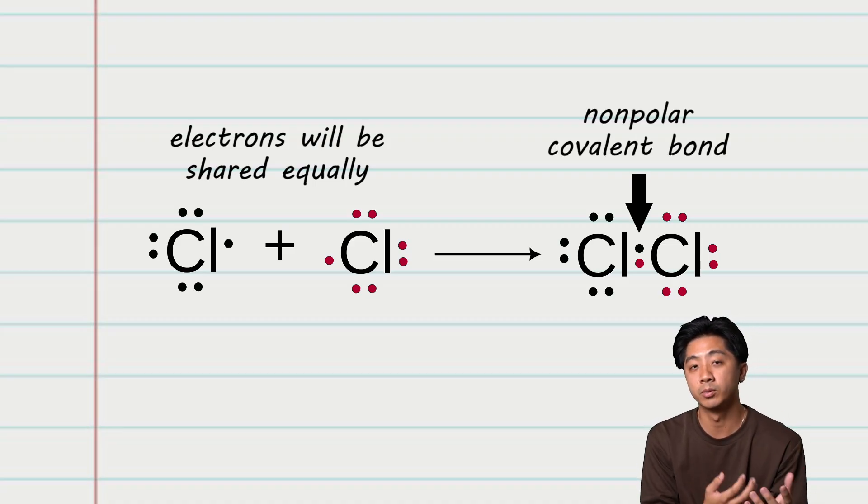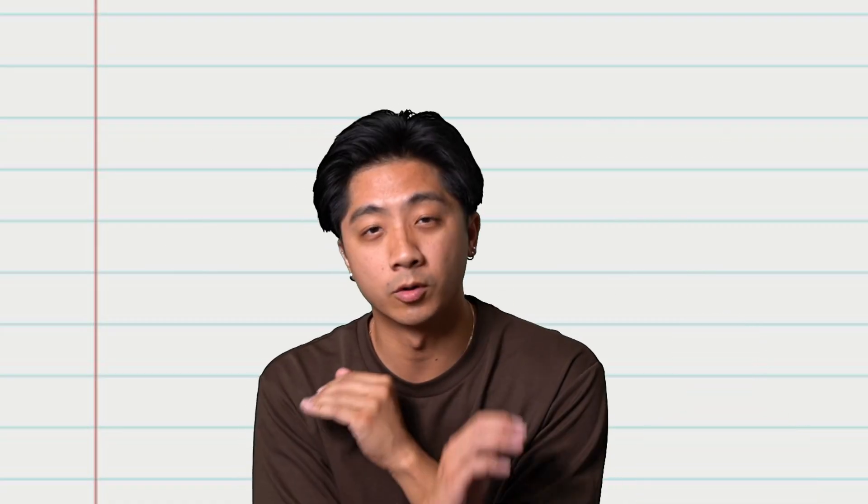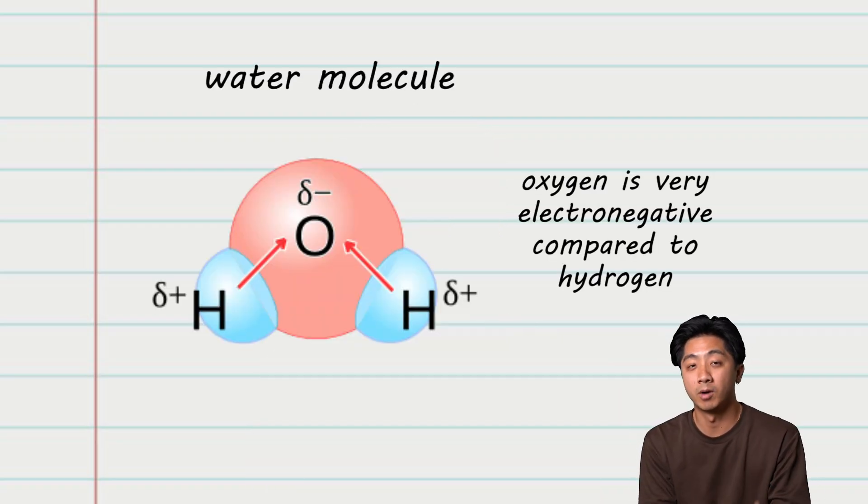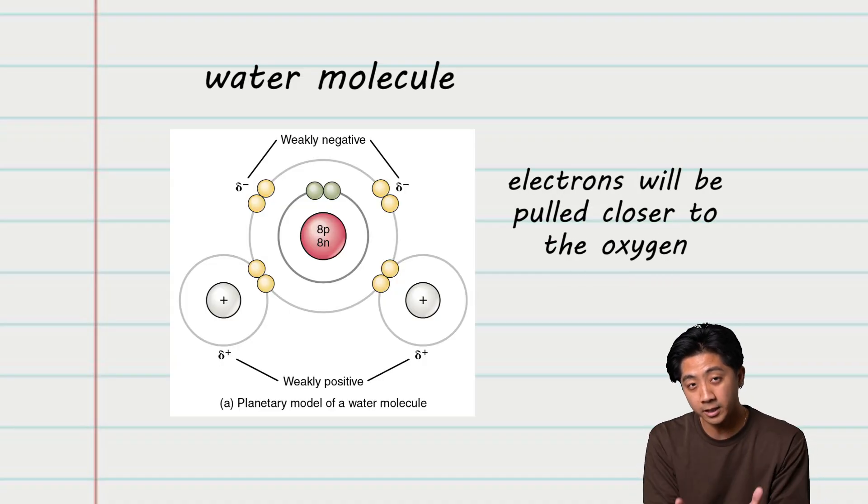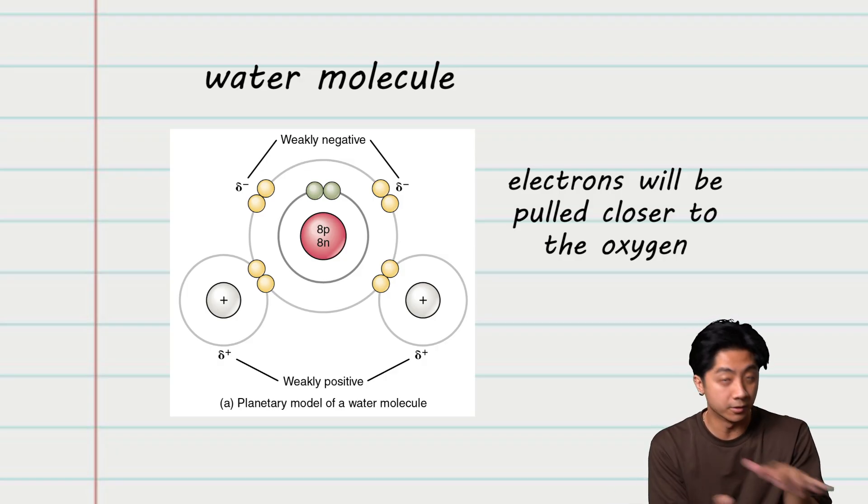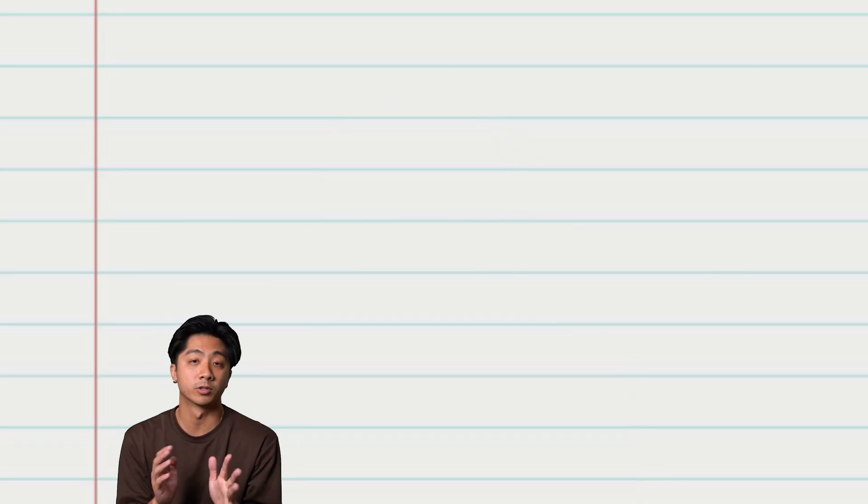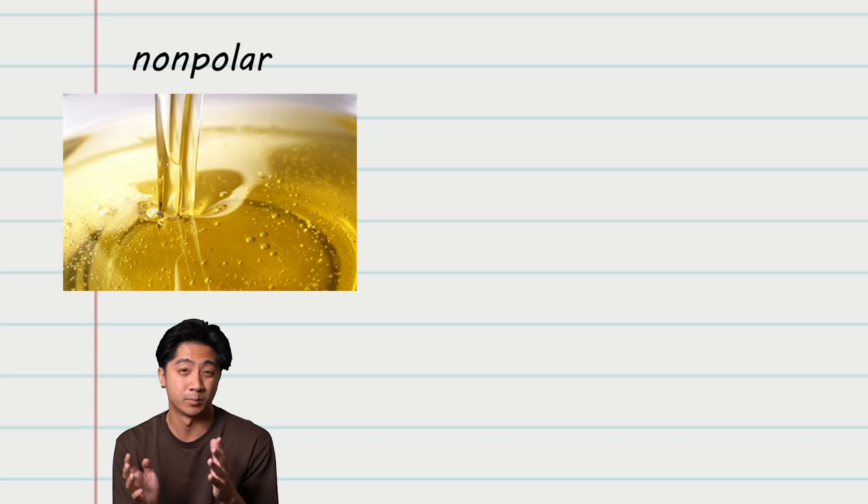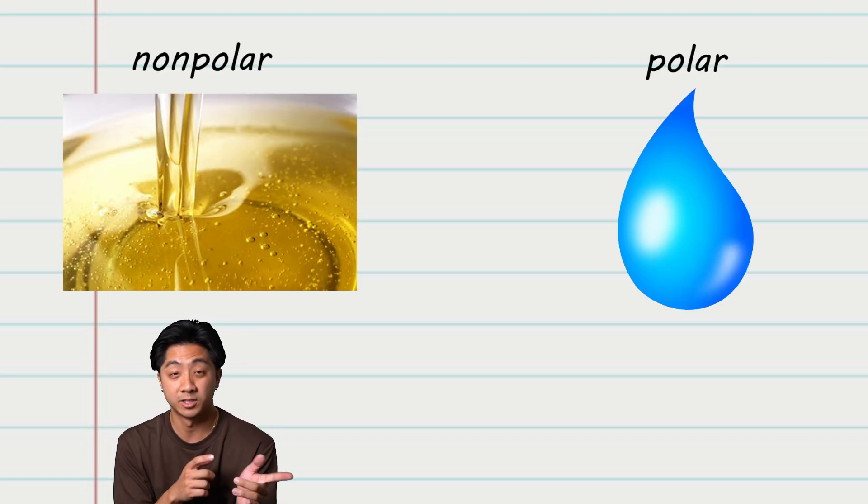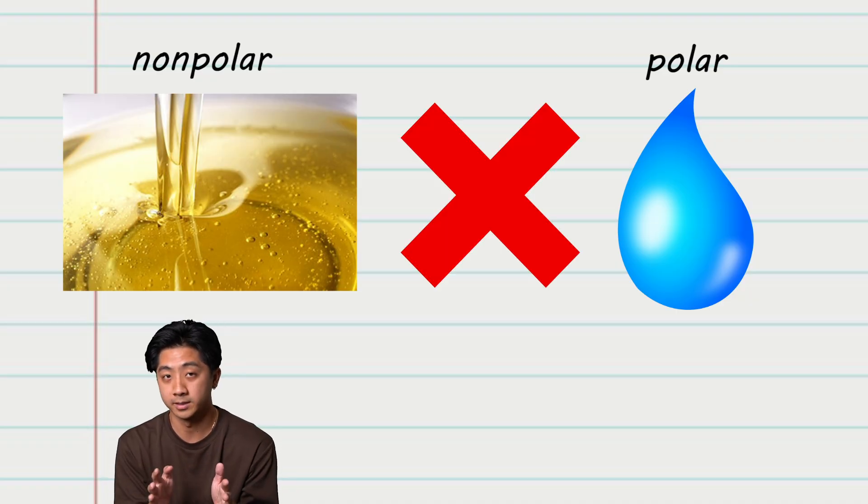But elements don't always share electrons equally. If a very electronegative element binds to a molecule, it will actually cause the molecule to have an unequal distribution of electrons. This causes one side of the molecule to be more negative and the other side to be more positive. This is known as a polar covalent bond and can make a molecule polar. An example of a non-polar compound is oil, and an example of a polar compound is water. As you probably know, water and oil don't mix, and that's because of their differences in polarity.